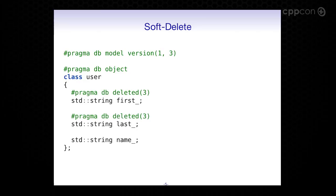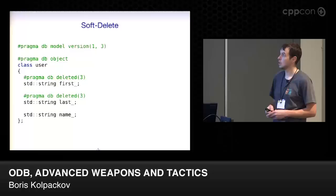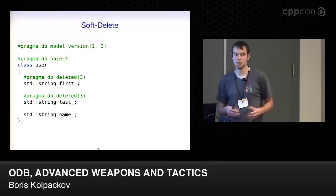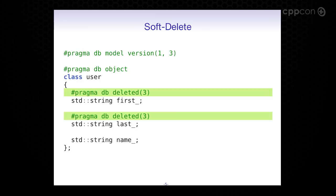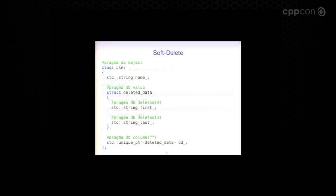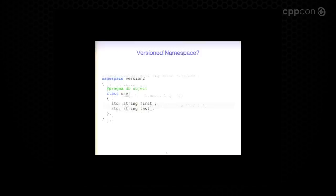Let's start with soft delete. The idea is that instead of physically removing data members from our classes, we mark them as deleted at a specific version. Once the member is deleted, ODB stops treating it as persistent starting from that version. It still loads it between the pre- and post-migration steps. But once the columns are dropped and the schema is really version 3, those members are treated as transient — no longer stored or loaded from the database. All we have to do is keep the data members and say they are deleted at version 3. Once we do that, this just works.